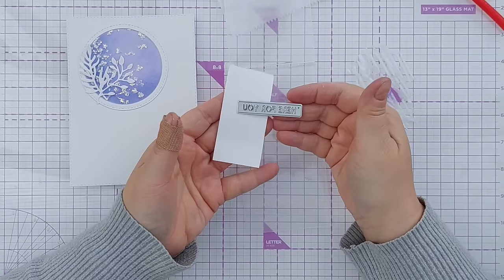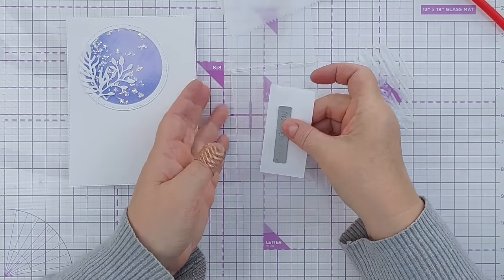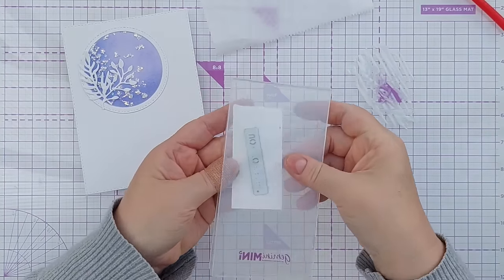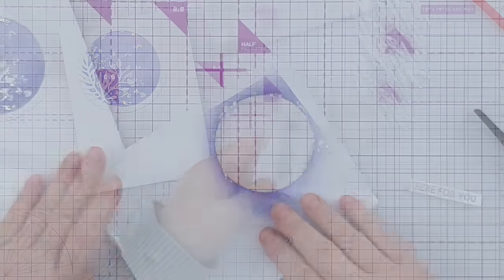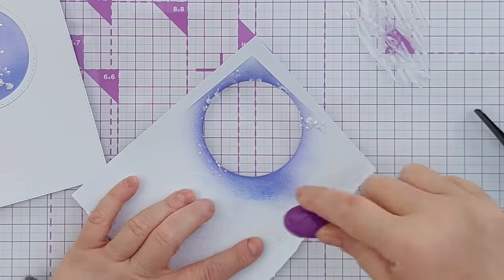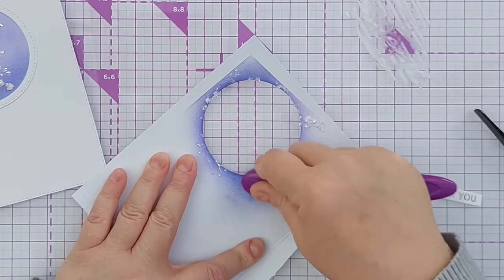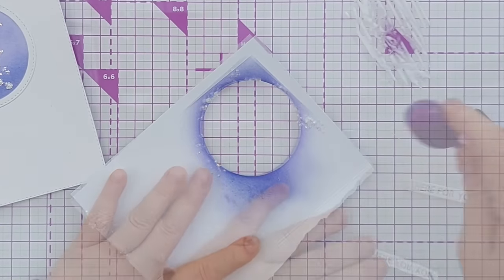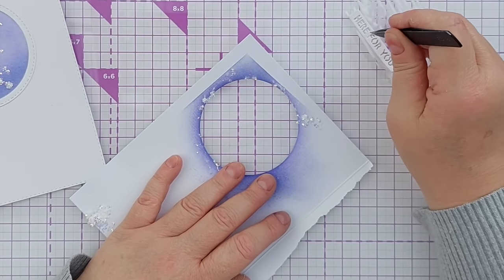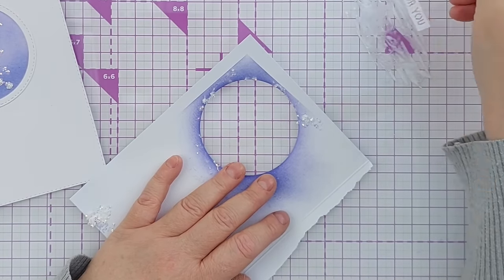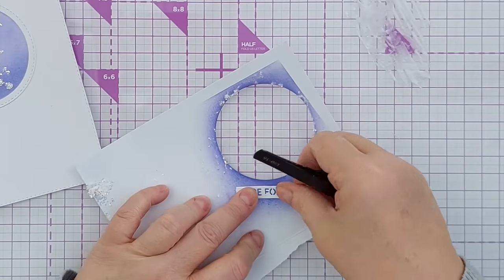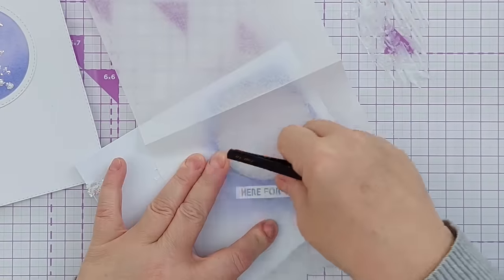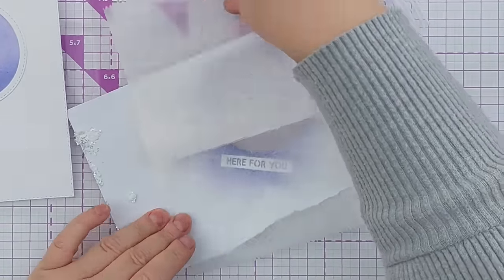For my sentiment, I've got this Here For You die. So I'm going to cut that again from the same card. I'm going to use this bit here and just add whatever color's left on my brush. Dip the sentiment piece in this glue, stick that on there like that, press it down, and then trim that out.